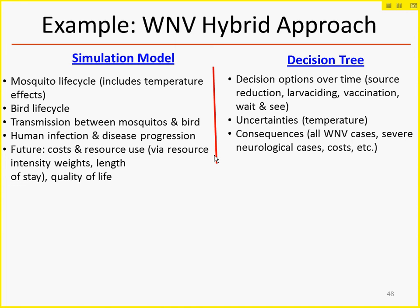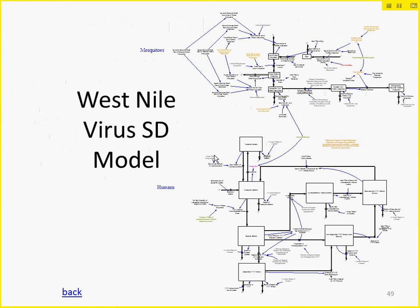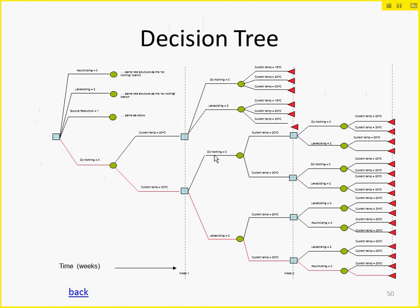The West Nile virus system dynamics model — worked on by a student, built up by previous generations of students — represents the mosquito life cycle: eggs, pupae, larvae, susceptible adults, exposed adults, and infectious adults. These mosquitoes bite birds. There's a representation of birds distinguishing juveniles from adults, because mosquitoes seem to prefer juvenile birds with their tender flesh. Then there's a representation of humans in terms of progression of human cases.